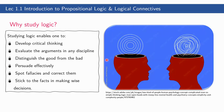Why study logic? We study logic to enable us to first develop critical thinking and evaluate the arguments in any discipline — not just in logic itself or in math or science, but in every discipline possible and even in our real life. Third is to distinguish the good from the bad and persuade effectively. If you reason out correctly, then you may persuade people effectively. We also study logic to spot fallacies and correct them, and to avoid doing them. And last but not the least, we study logic to stick to the facts in making wise decisions.